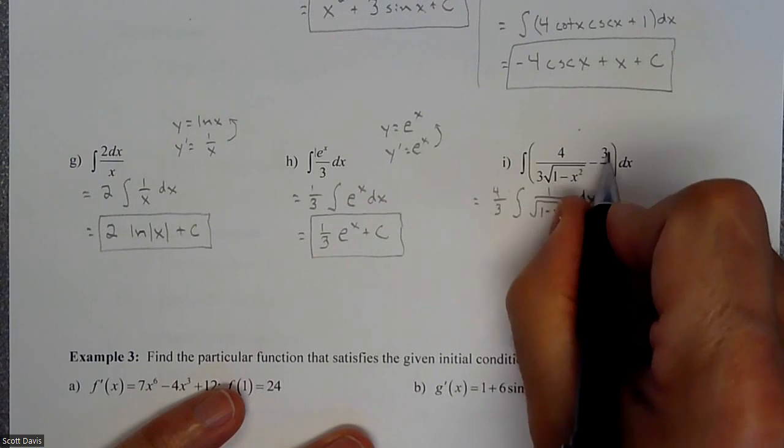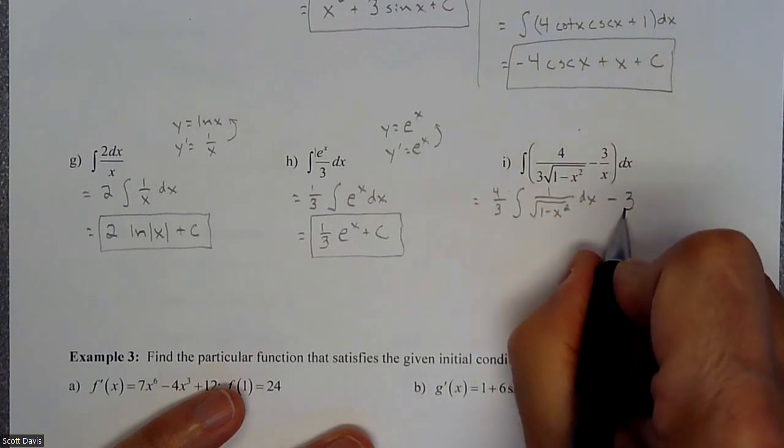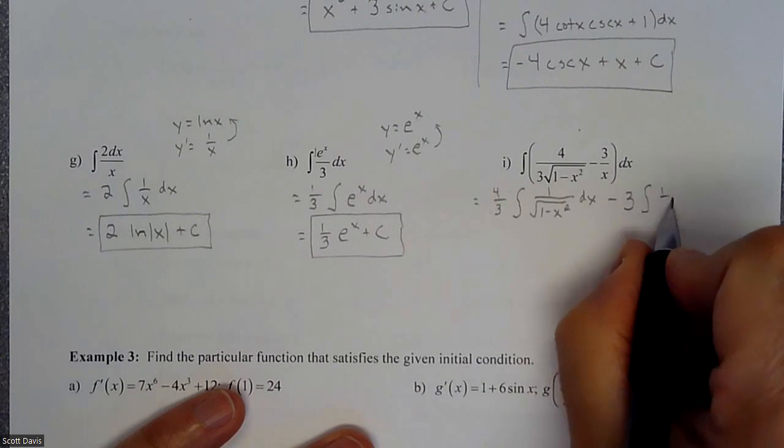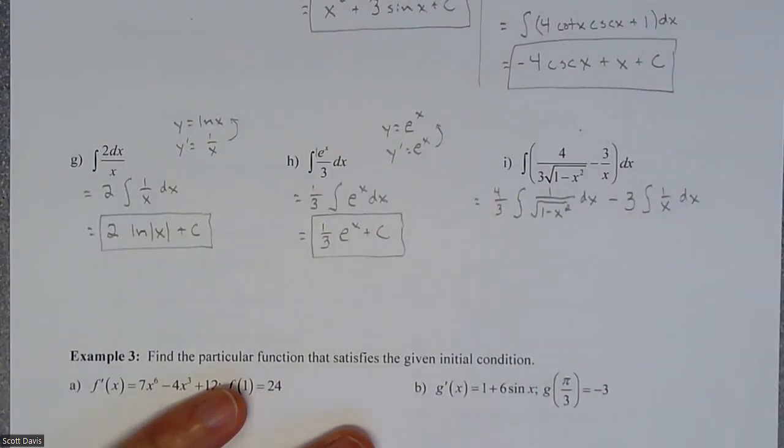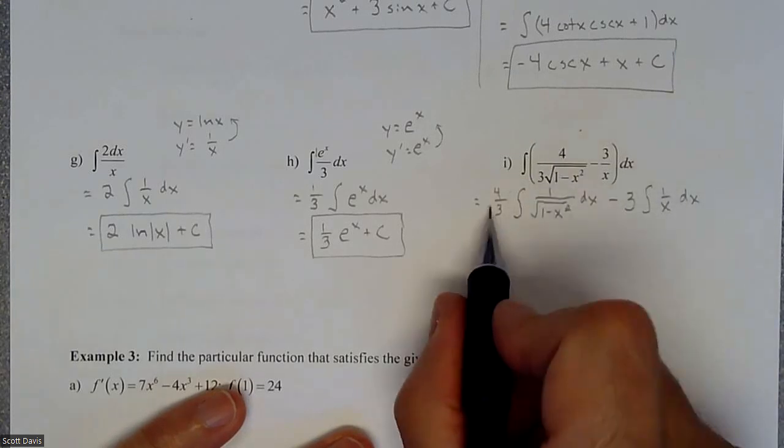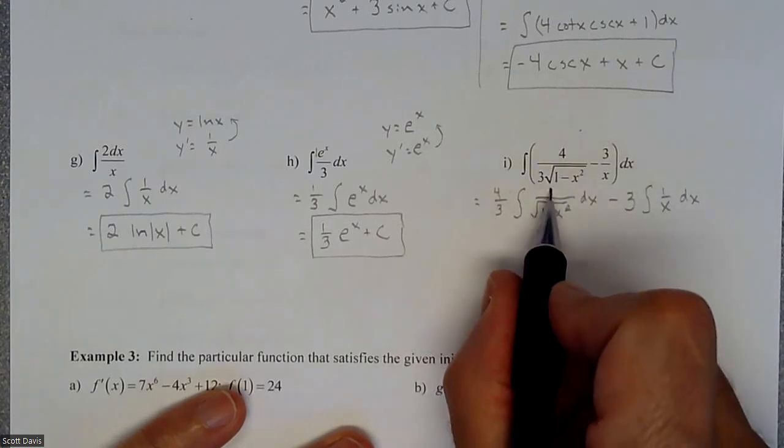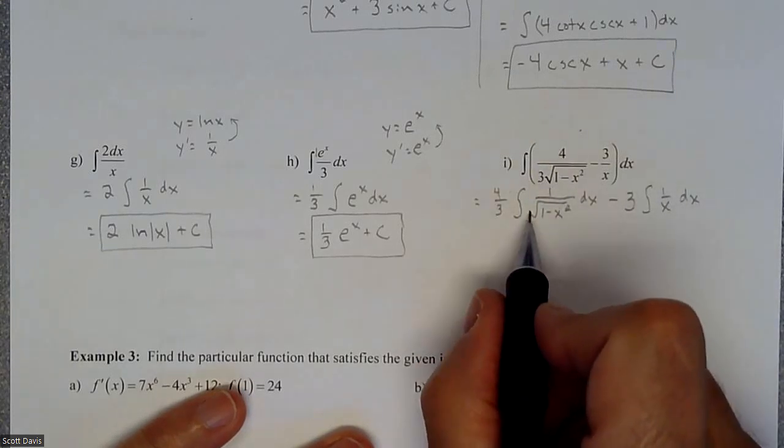So I'm going to put its own dx here minus, and then this is a three over x, which means I can take the three out of it. And then I have a one over x dx. So I pulled the four-thirds off of this fraction. That's left it as a one and a one on the bottom.